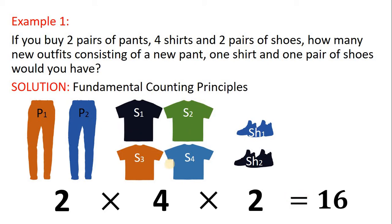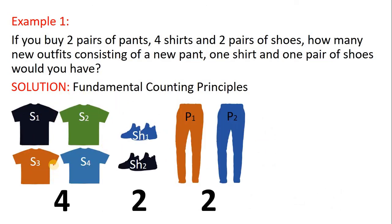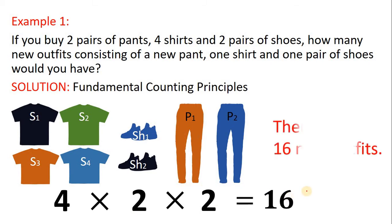Even if you rearrange which action comes first — say your first action is to choose which shirt to use (four options), second action is which pair of shoes (two choices), and third action is which pants (two options) — getting the product of all these options, you still end up with 16. So there are 16 new outfits total. This is the fundamental counting principle.